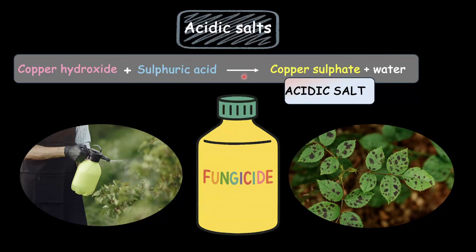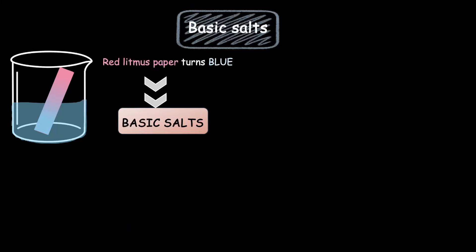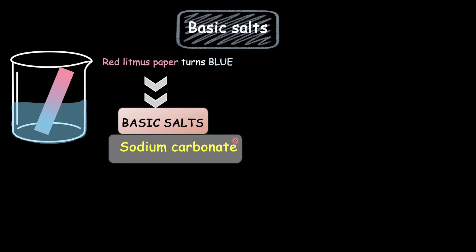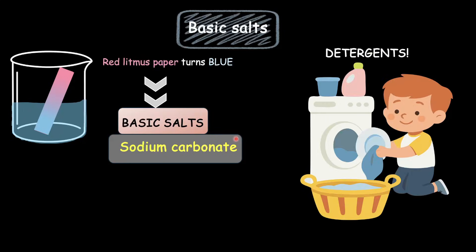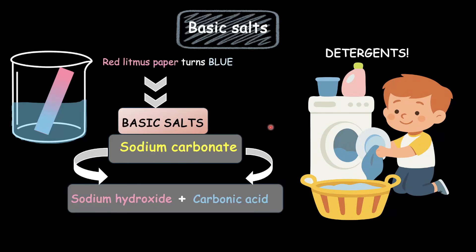We have talked about neutral salts and acidic salts — what about basic salts? Basic salt solutions would turn red litmus paper blue. One of the most common basic salts we use in everyday life is sodium carbonate. Sodium carbonate, also called washing soda, is used in detergent powders to help remove stains from clothes. This salt is formed by the neutralization reaction of sodium hydroxide and carbonic acid.